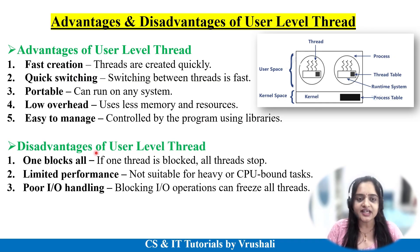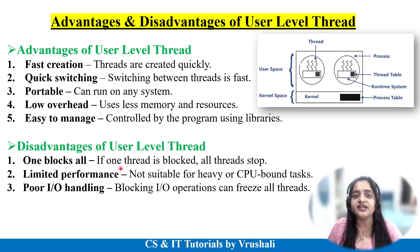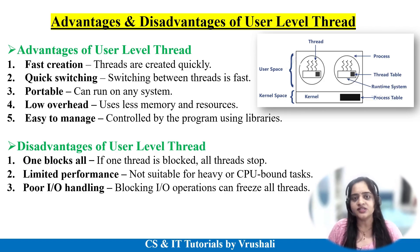What are the disadvantages of user level threads? The main disadvantage is if one thread is blocked or goes down, then all other threads are stopped and they cannot perform their own functionalities — that's why they have poor input/output handling. They also have limited performance and are not suitable for large-scale projects or heavy CPU-bound tasks.